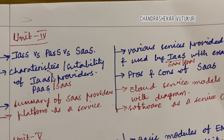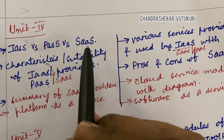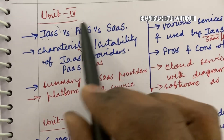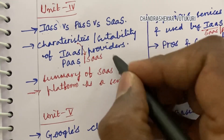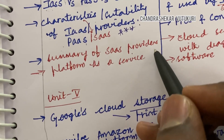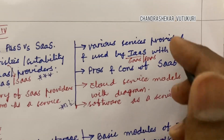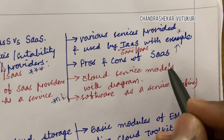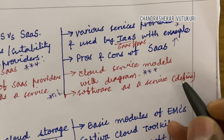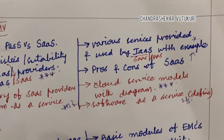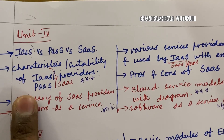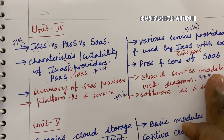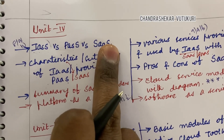Unit 4 is focused on only three parameters that may be asked from any part: IaaS, PaaS, and SaaS — their differences, characteristics, suitability, and providers are said to be topmost questions. Summary of SaaS providers, Platform as a Service as a 2 or 3 mark question, and the various service providers used by IaaS, SaaS, and PaaS with examples and their pros and cons are important. The cloud service models with a diagram is one of the topmost questions. For questions 8A, 8B, 9A, and 9B, you are supposed to concentrate on each and every parameter related to all three concepts — failing which you cannot get 15 marks.